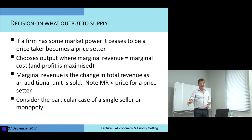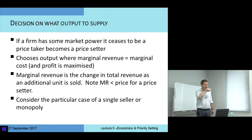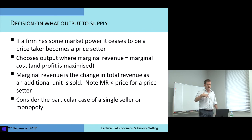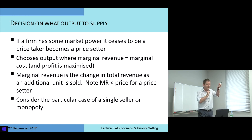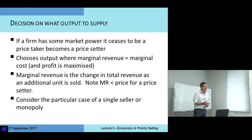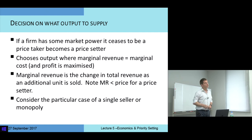This is different from the price taker, who is given a price and chooses the quantity that maximizes profit. For a firm with market power, it has both price and quantity to choose. What it has to look at is marginal revenue — the change in revenue from selling an additional unit. But to sell an additional unit you have to lower your price.